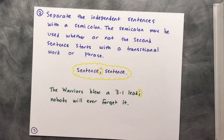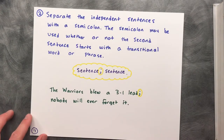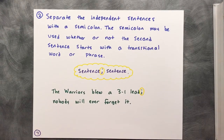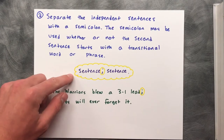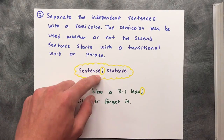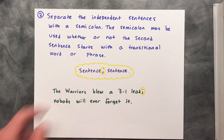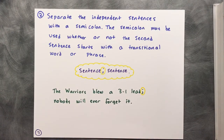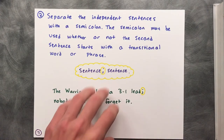Another method is to separate the independent sentences with a semicolon. The semicolon may be used whether or not the second sentence starts with a transitional word or phrase. For example: 'The Warriors blew a 3-1 lead; nobody will ever forget it.'